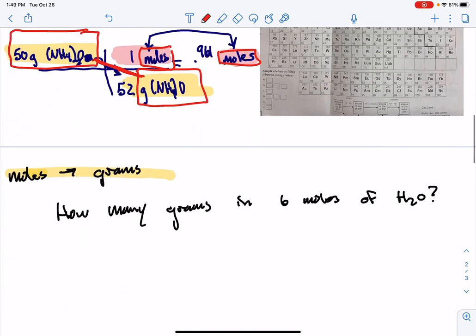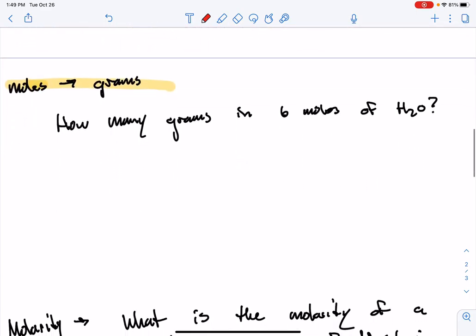Okay, if I look at the next part, it's going to be the same but different. This time, it wants to know how many grams are in six moles of H2O. So I have the same thing. I need to first find the molar mass of H2O.